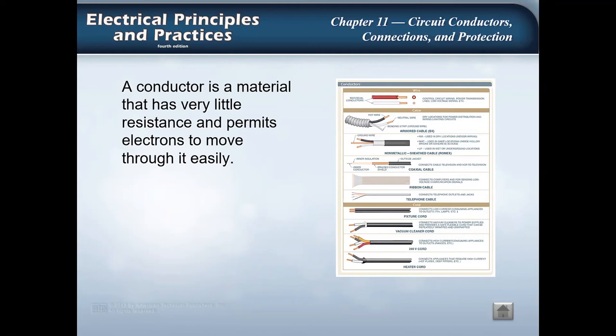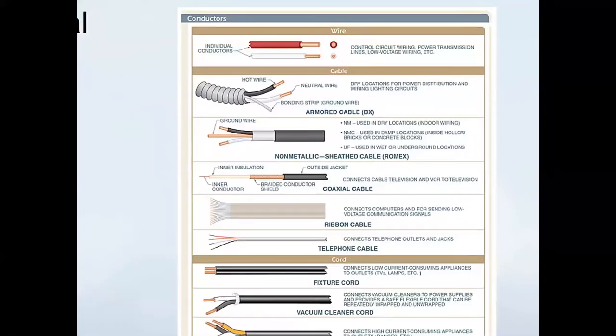As you can see from the graphic on the screen, there are many different types of conductors that can be used in our circuit. With wire, we can have just single-strand conductors that could either be solid or they could be stranded. They come in different wire sizes.